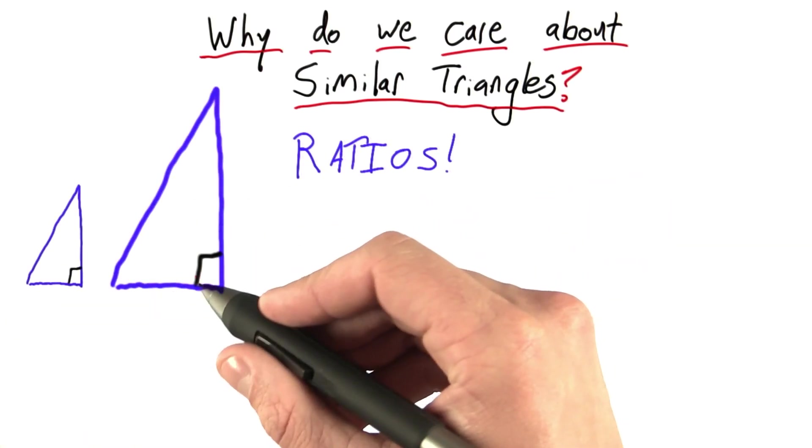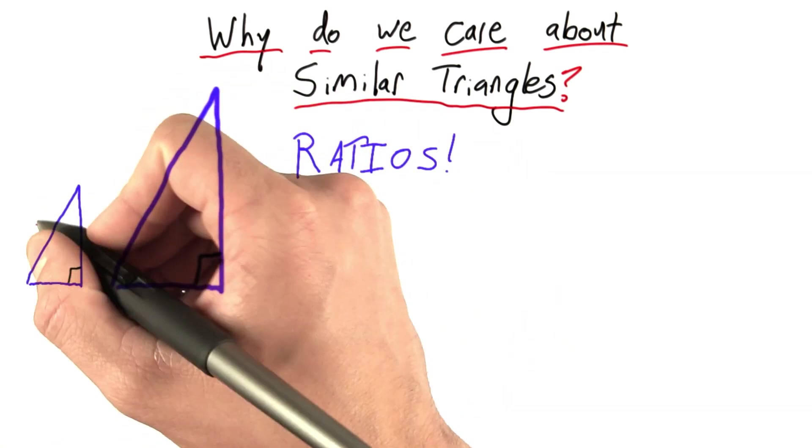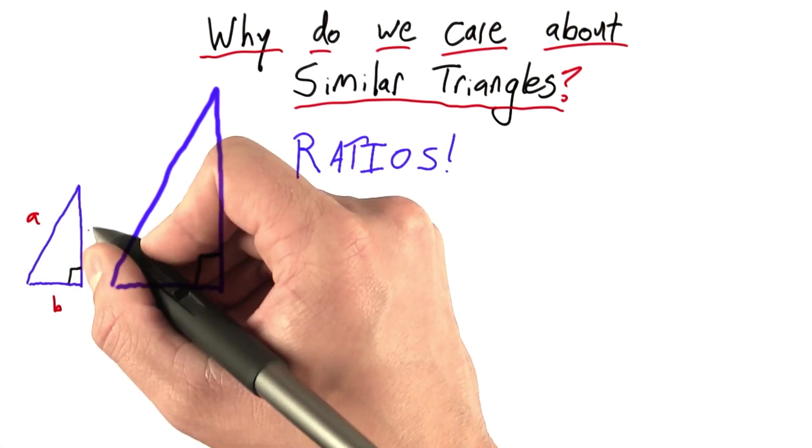I have two triangles here. They're similar because the angles match, but the sides are different. I'm going to label these sides little a, little b, and little c,